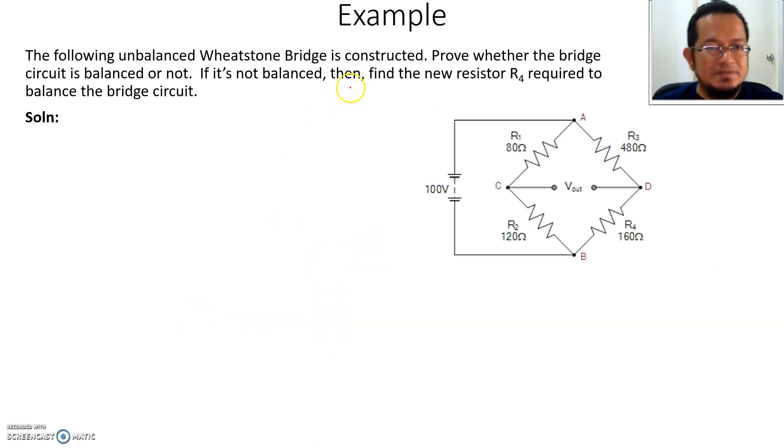This is another example, a little bit different. This is a Wheatstone bridge, and all the resistors here are given. The question asks you to prove whether the bridge circuit is balanced or not. If it's not balanced, then find the new resistor required to balance the bridge circuit.